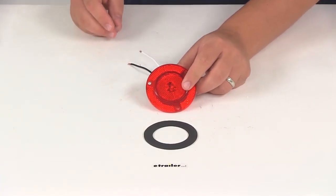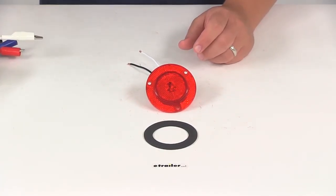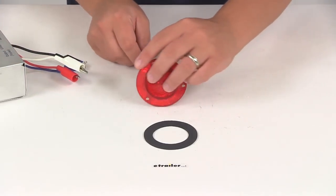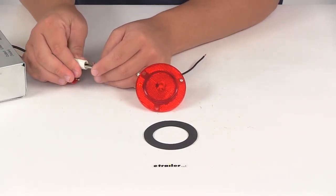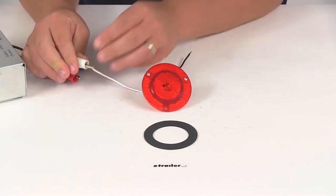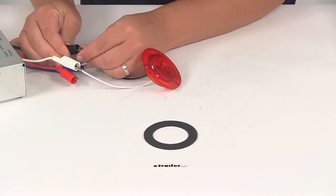Now we'll hook it up to our external power source so you can see what it looks like with power running to it. We'll take the white wire and ground it, and the black wire for power.